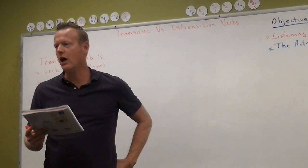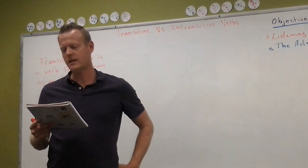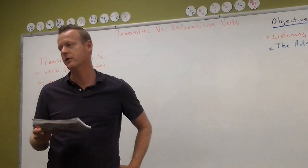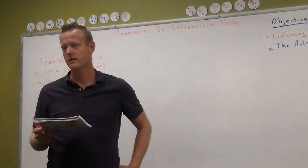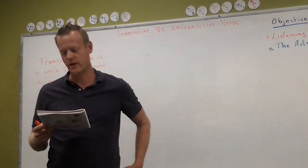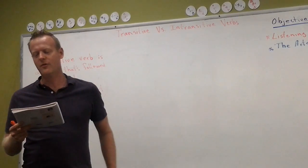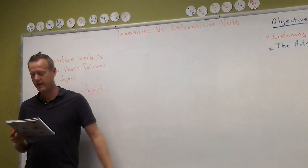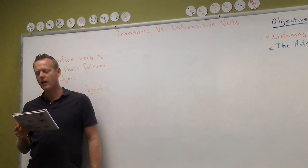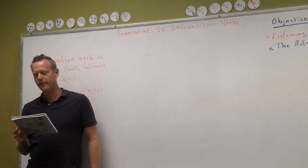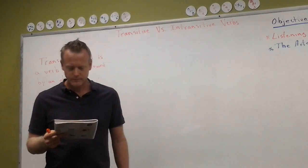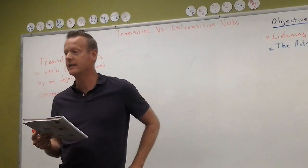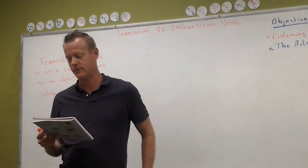Take this example: 'The tree fell over.' Does that have an object? No, it doesn't. So is it transitive or intransitive? Intransitive. Now, 'The tree hit the truck' — transitive. It has an object. 'The tree fell on the truck' — on the truck is a prepositional phrase acting like an object.